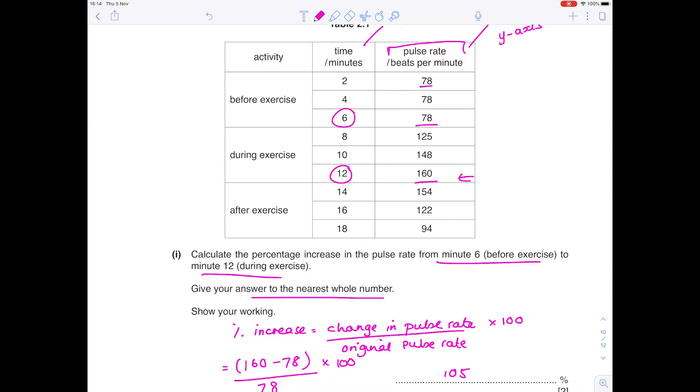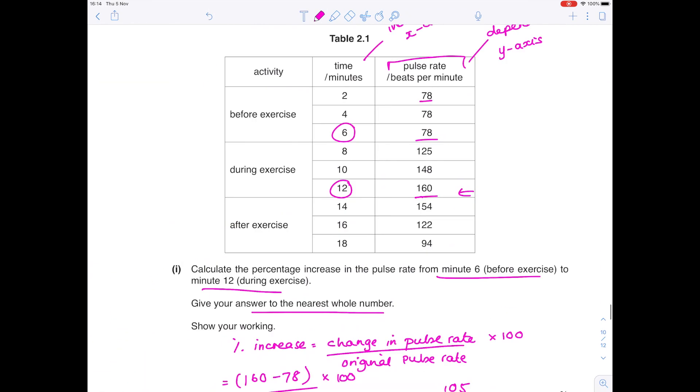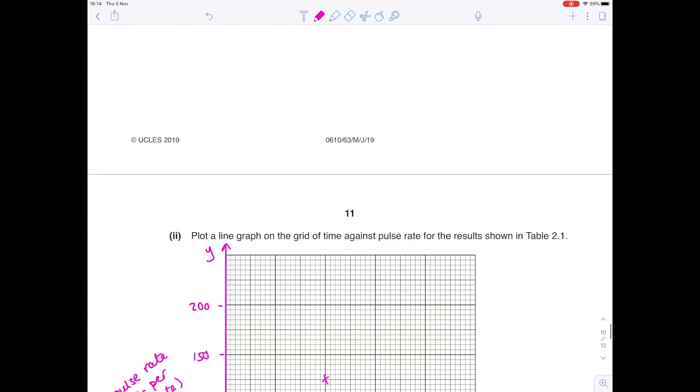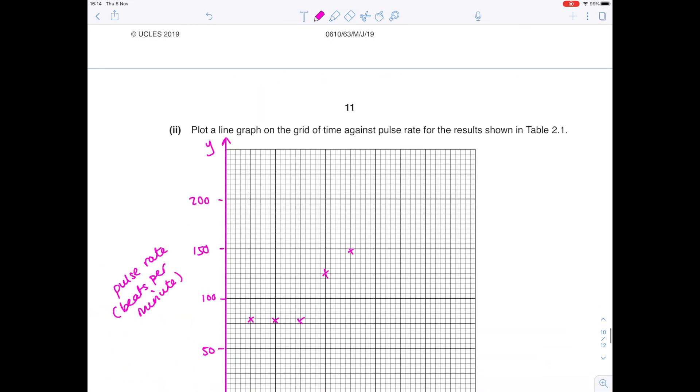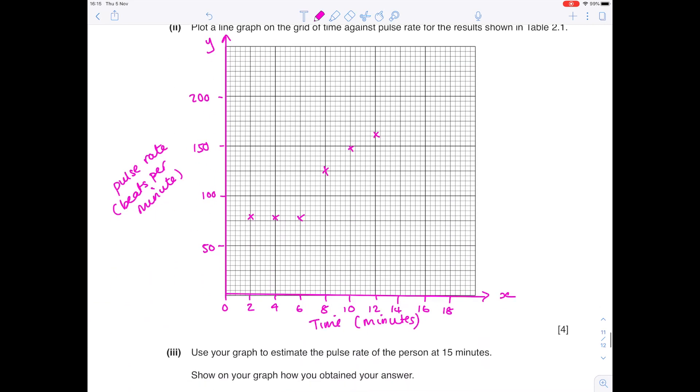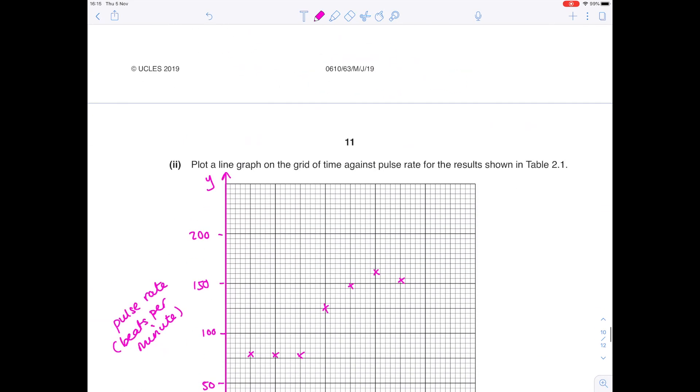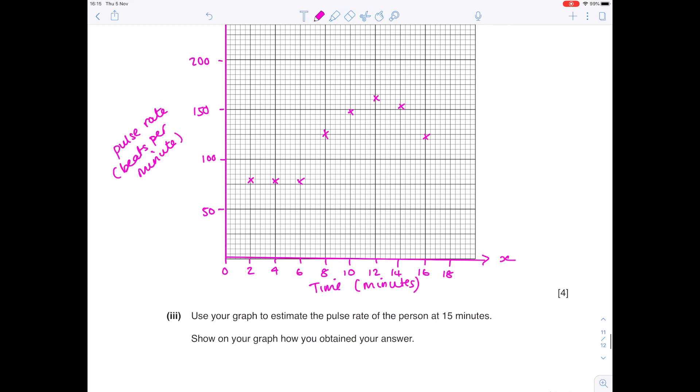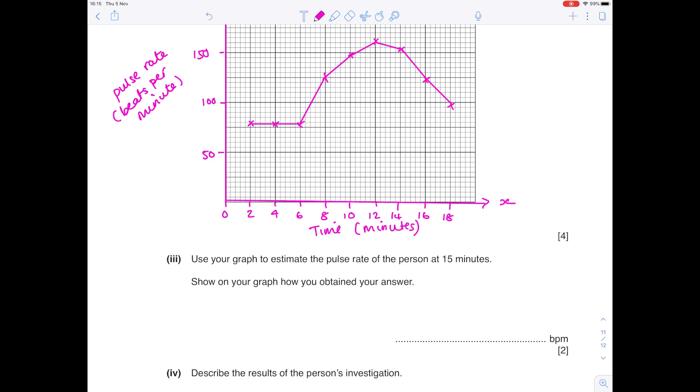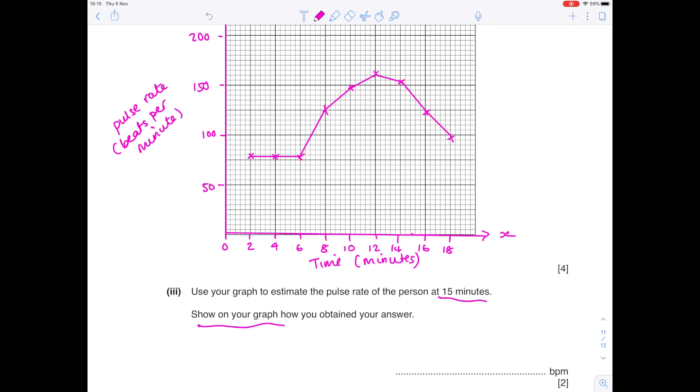Now we're ready to plot that graph line. So from minute 2 to 6, our pulse rate is 78. At minute 8, we go up to 125. 10 is 148. 12 is 160. 14 is 154. 16 is 122. 18 is 94. Use a straight line to join up your dots. Use your graph to estimate the pulse rate of the person in 15 minutes. Show on your graph how you obtained your answer. So we need to read up at 15 minutes, which is here. I'm drawing a line on my graph because it wants me to show my working. And then I'm going to read across on my y-axis to work out what that number is. I think that's around 138 beats per minute.